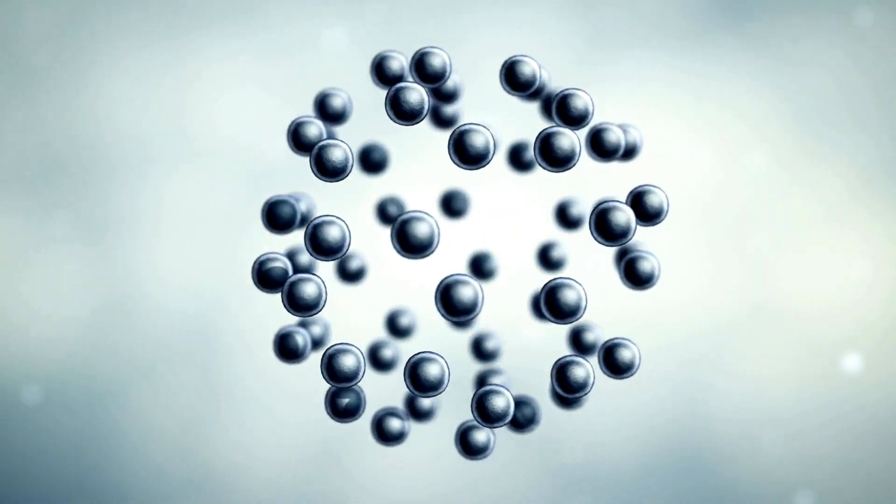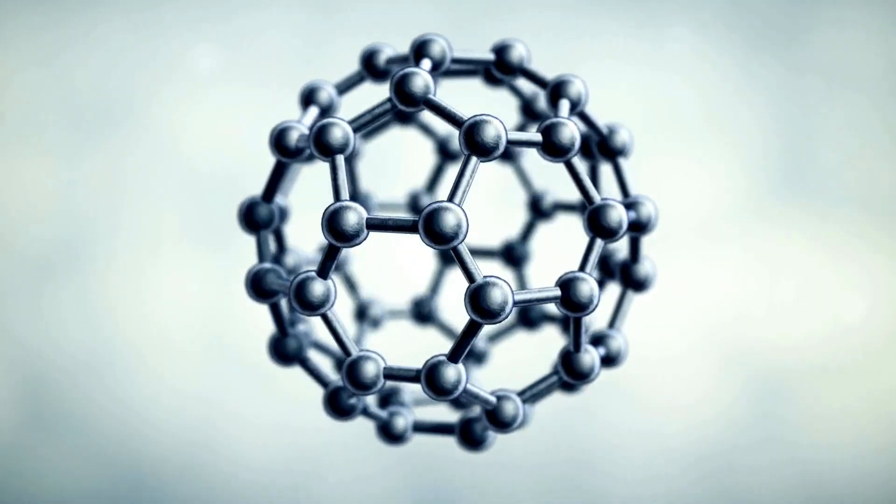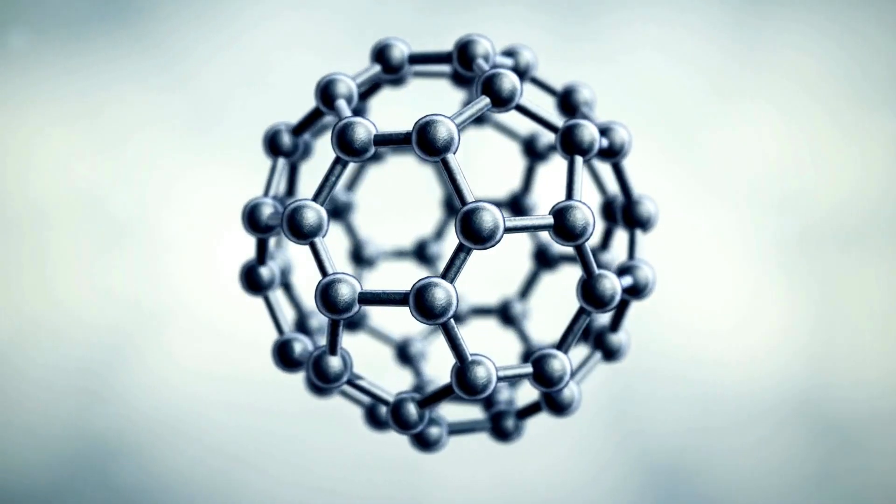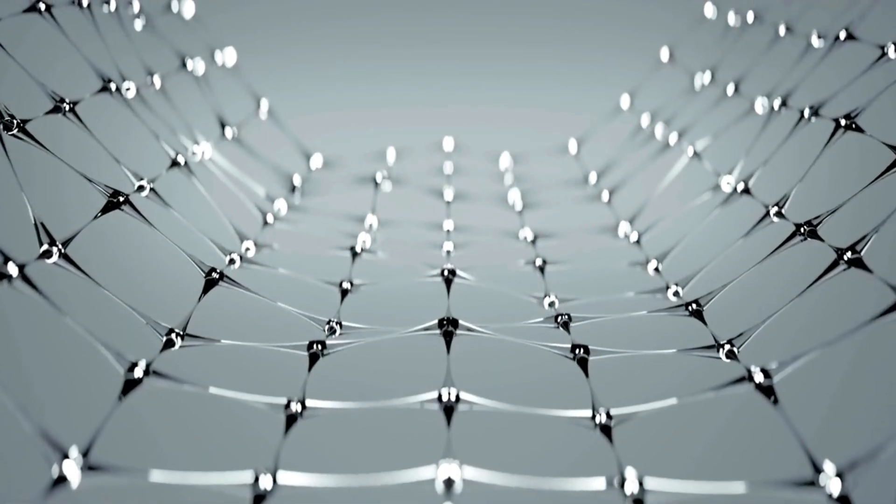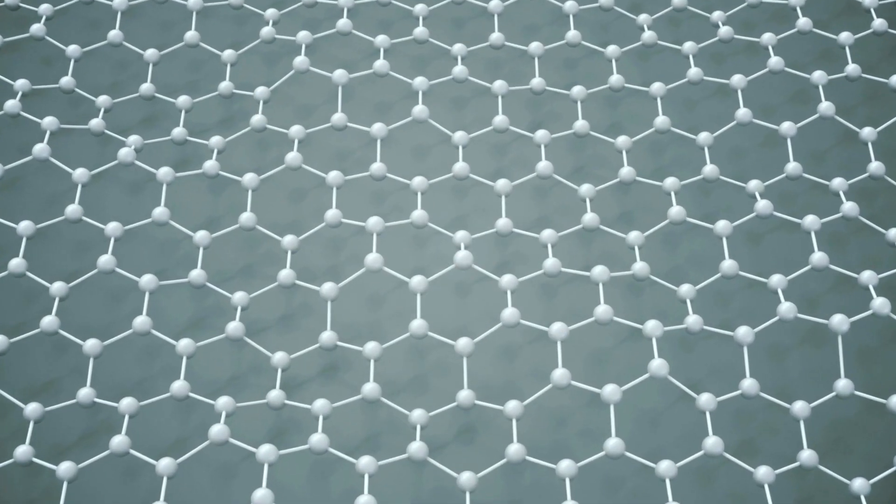So what happens when we reduce graphene oxide? We get reduced graphene oxide or rGO. Reduction involves removing some of those oxygen-containing groups from the graphene oxide, converting it closer to pristine graphene. This process improves its electrical conductivity and mechanical properties while maintaining some of its processability.